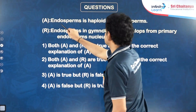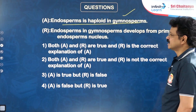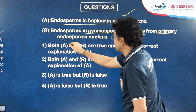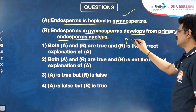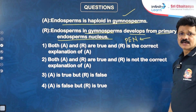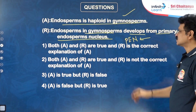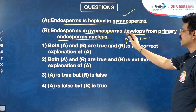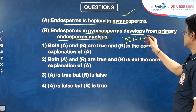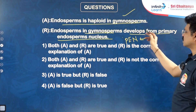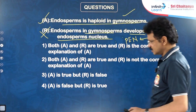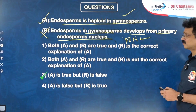Next question: Endosperm is haploid in gymnosperms — true. Reason: Endosperm in gymnosperms is developed from primary endosperm nucleus, which is the product of triple fusion. This reason is wrong — triple fusion is absent in gymnosperms. That is why endosperm is never triploid in gymnosperms. Assertion is true but reason is false — third option.